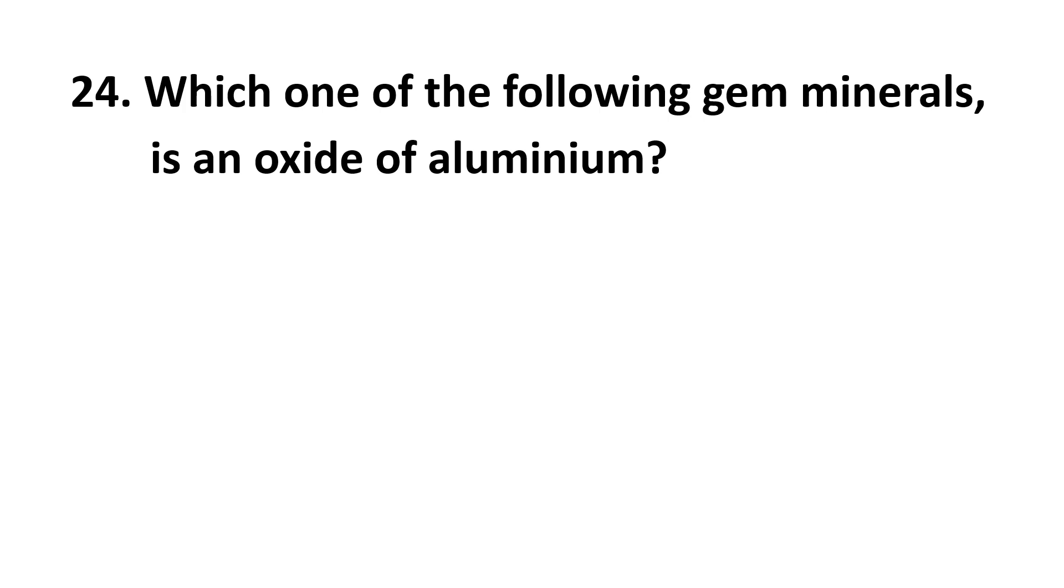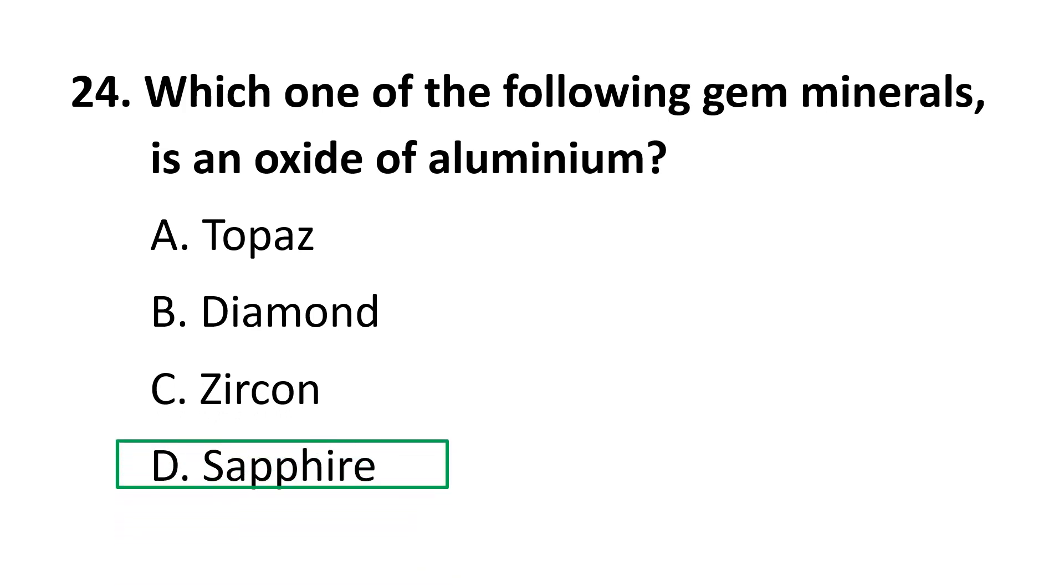24th question: which one of the following gem minerals is an oxide of aluminium? Choices are A Topaz, B Diamond, C Zircon, D Sapphire. The correct answer is D Sapphire.